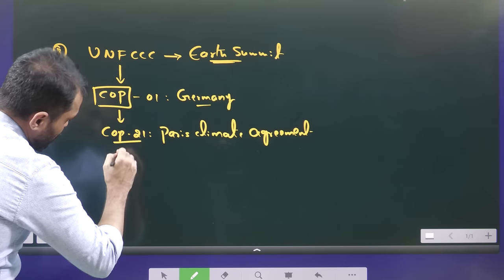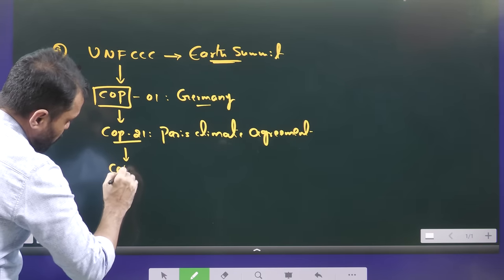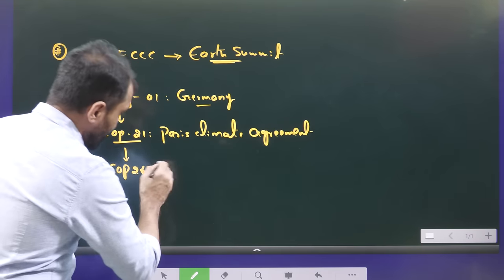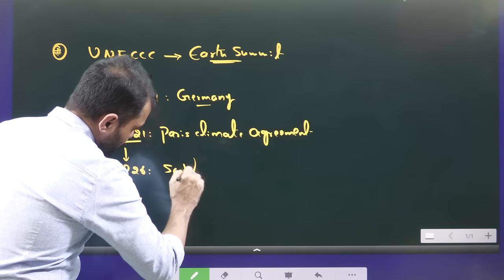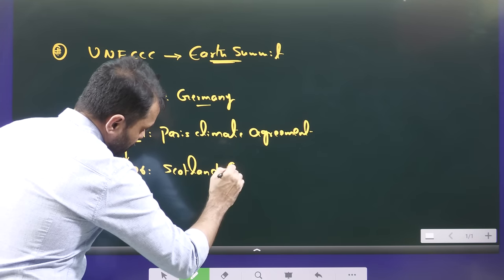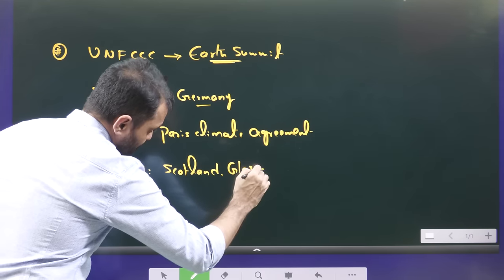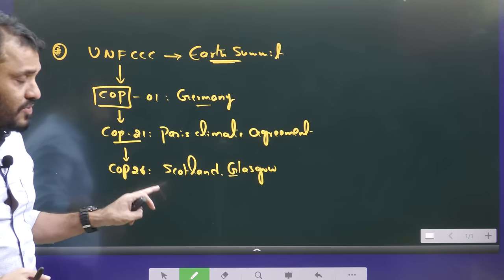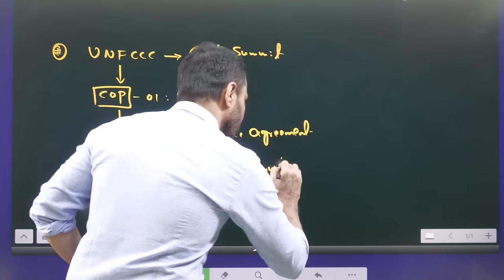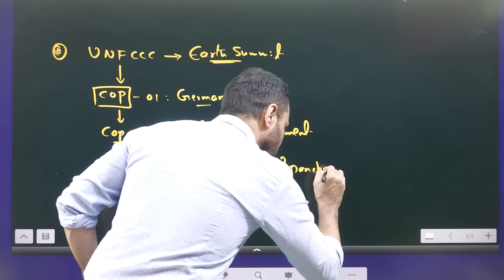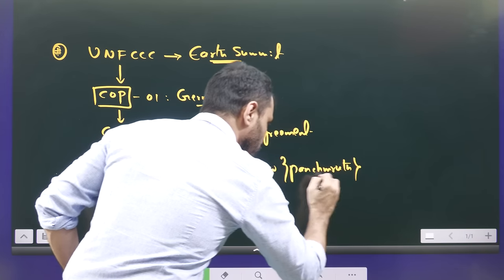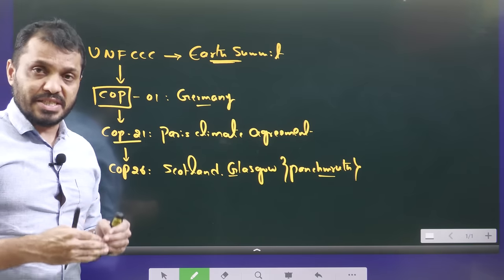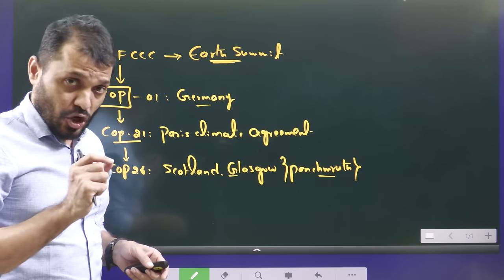Apart from this, another important meeting was COP26, which was held in Glasgow, Scotland. In this meeting, India came up with its own climate targets in the form of the Panchamrit. In COP26, India declared that by 2070, India would like to achieve net carbon zero.